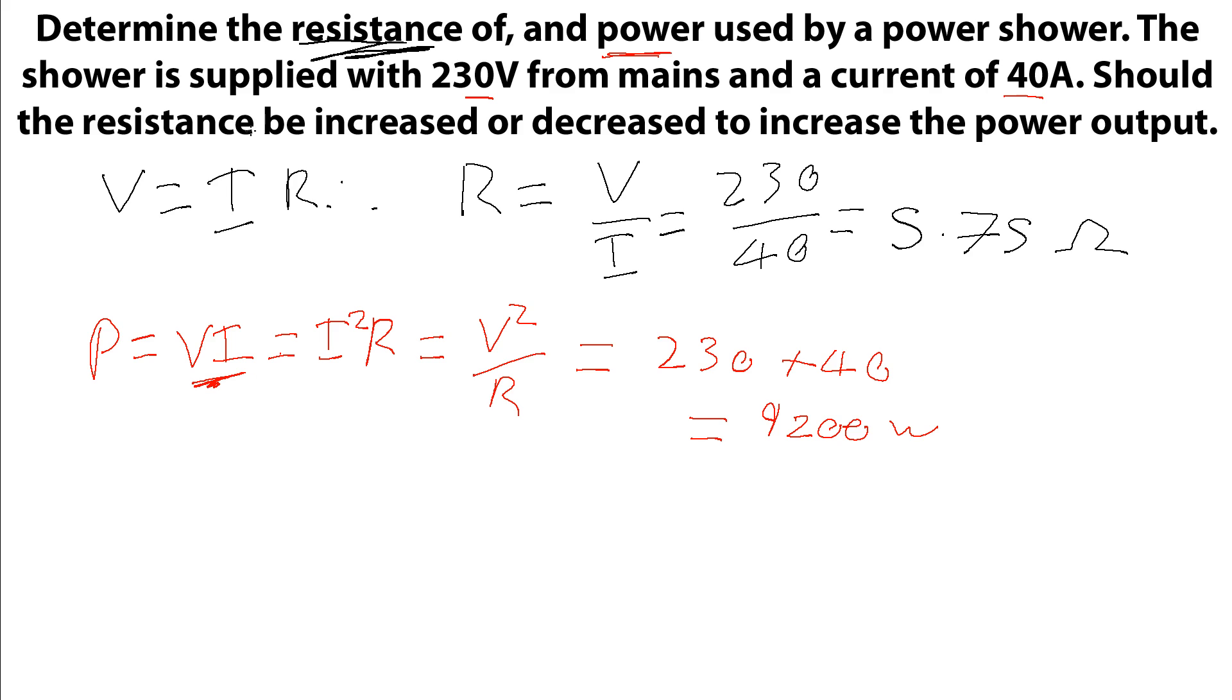The final part of the question is should the resistance be increased or decreased to increase the power output? So if we're going to be looking at the effect of resistance, then we're going to want either the equation I squared R or the equation V squared over R.